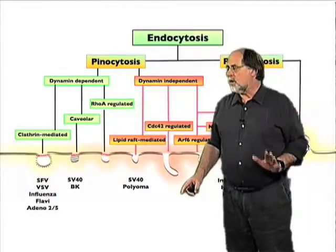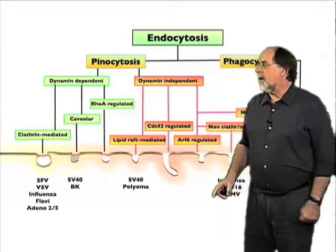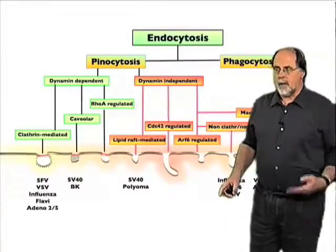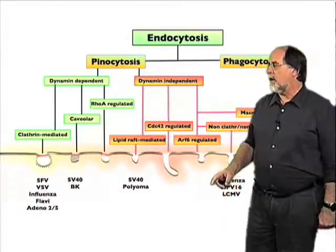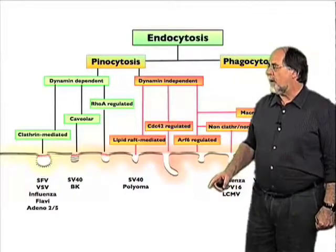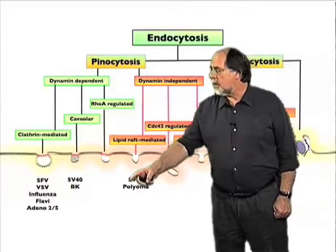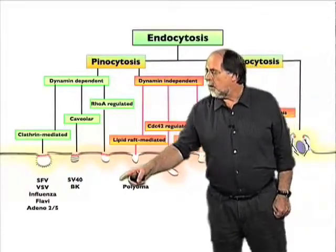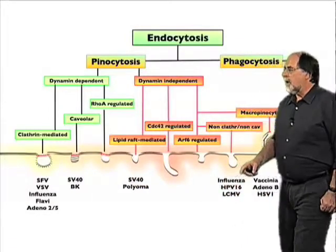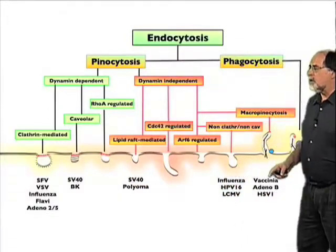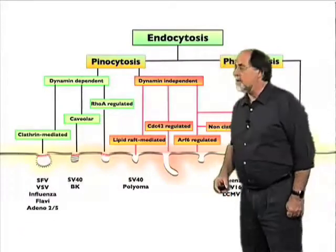A word of caution: some cells internalize a particular virus by one mechanism, while in another cell the same virus may enter by a different one. For example, SV40 can enter by two different mechanisms, and influenza virus also seems to use more than one type of mechanism.